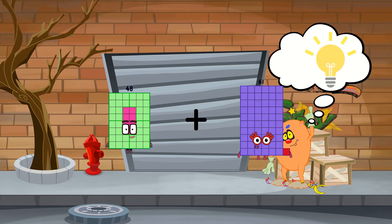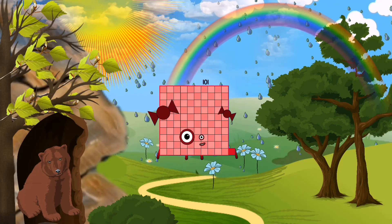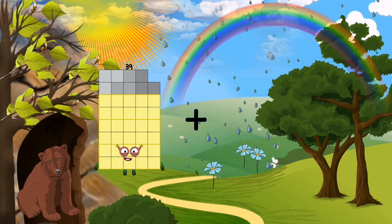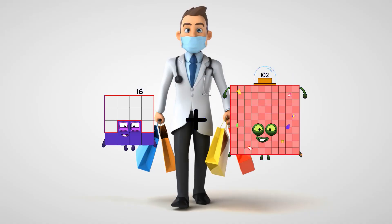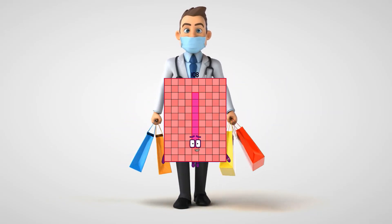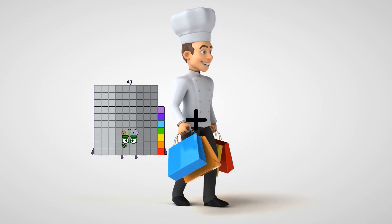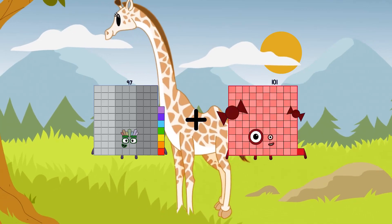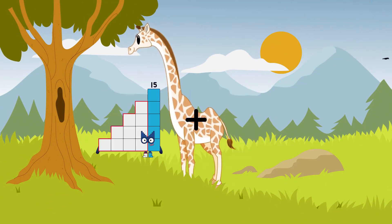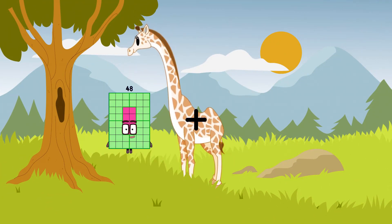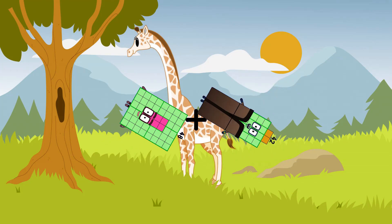48 plus 53 equals 101. 16 plus 92 equals 108. 97 plus 82 equals 179. 48 plus 42 equals 90.